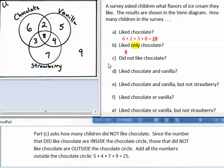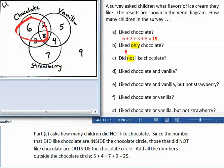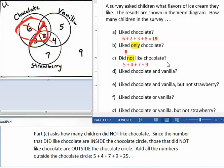Part C asks how many children did not like chocolate. Since the numbers that did like chocolate are inside the chocolate circle, we don't want those. So the numbers that did not like chocolate are outside the chocolate circle. So add the remaining numbers outside the chocolate circle. 5 plus 4 plus 7 plus 9, which equals 25.